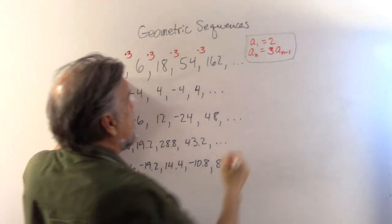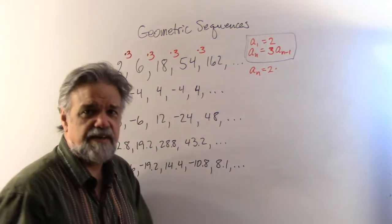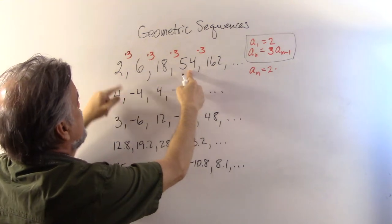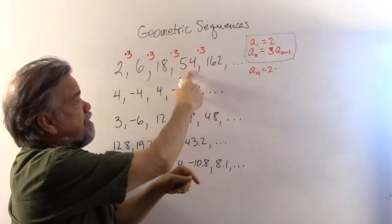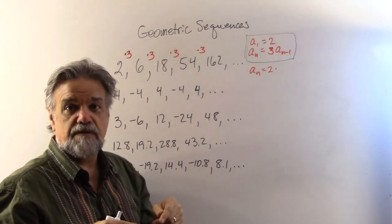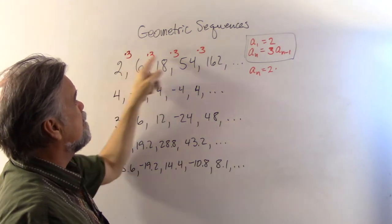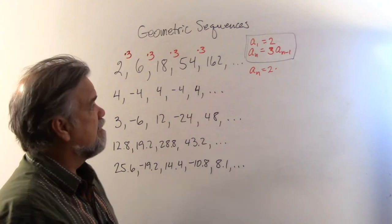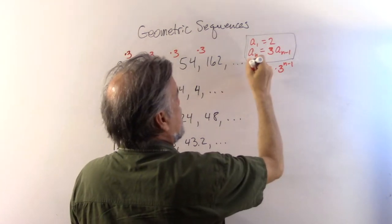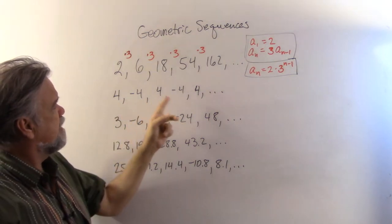Or we can define it explicitly. For example, the fourth term 54 is 2 times 3 times 3 times 3 — that's 2 times 3 to the third. The third term 18 is 2 times 3 squared. So any term is 2 times 3 to the n minus 1 power. That is the explicit way of defining this sequence.